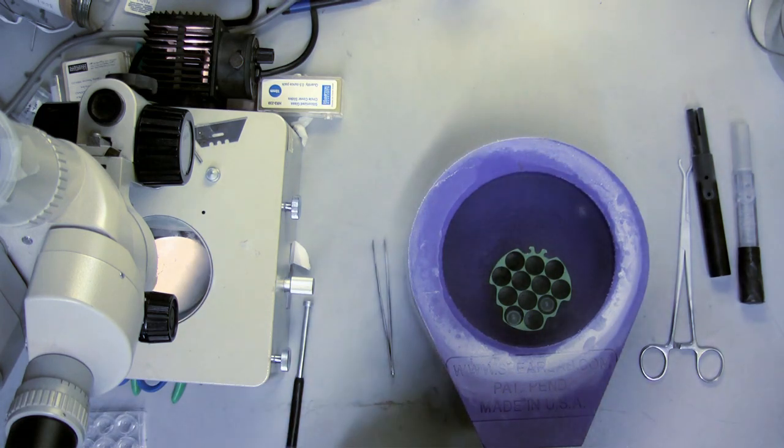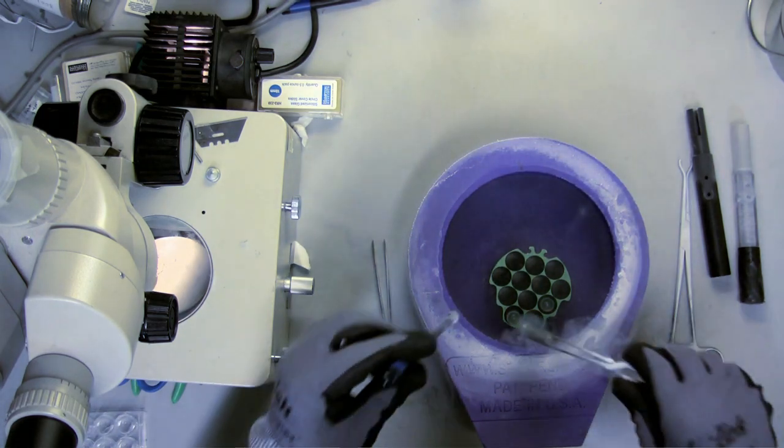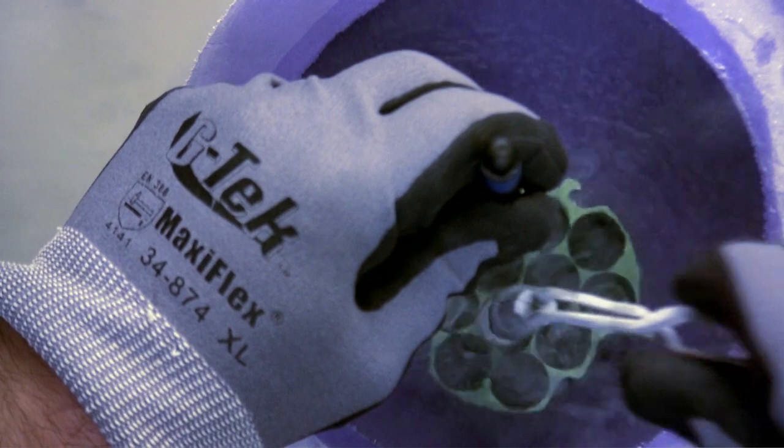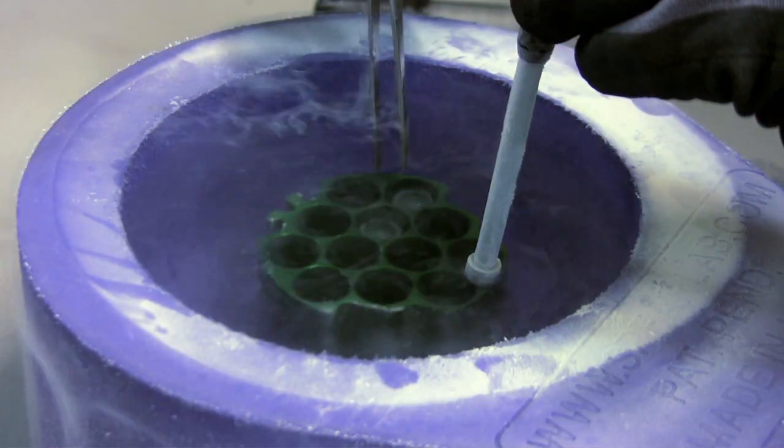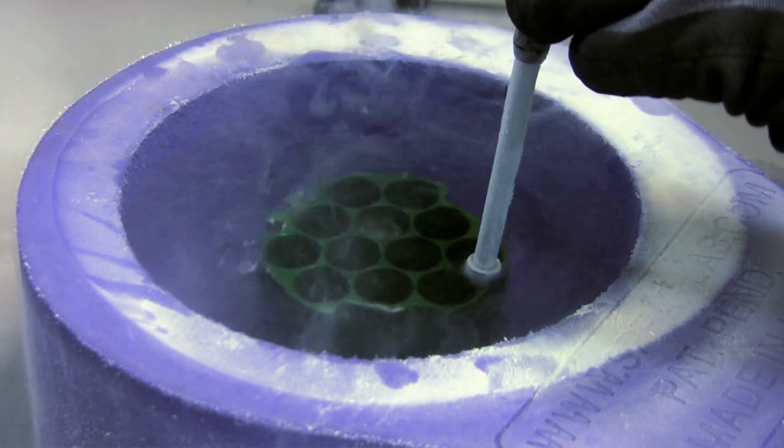Cryo vials can either be left on or removed for shipping. To remove a vial, you can either pull it off with cryo tongs or play a game of operation and take it out with forceps. I like to hold the puck down with a crystal wand while I do this.